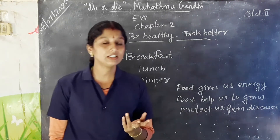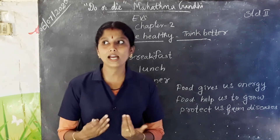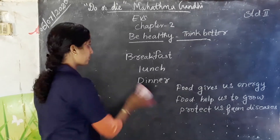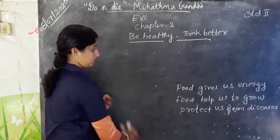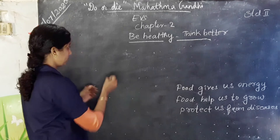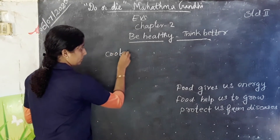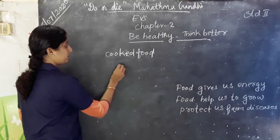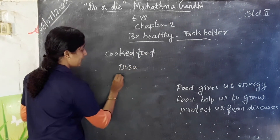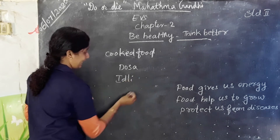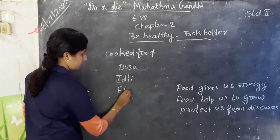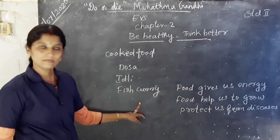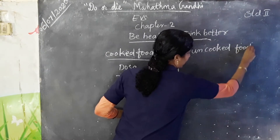Which food do we cook and eat? Can you say some examples of cooked food? Dosa, idli, fish curry — these are examples of cooked food.